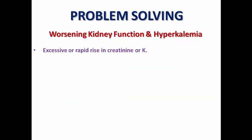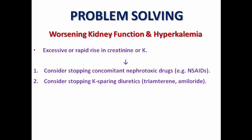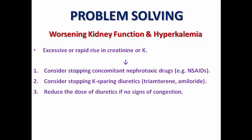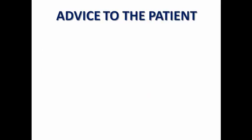In cases of an excessively rapid rise in creatinine or potassium that has not yet reached the threshold to stop ARNI, consider stopping concomitant nephrotoxic medications like NSAIDs, stopping potassium-sparing diuretics, reducing diuretic dose if no congestion is present, and if the problem persists, halving the ARNI dose and rechecking kidney function within one to two weeks.